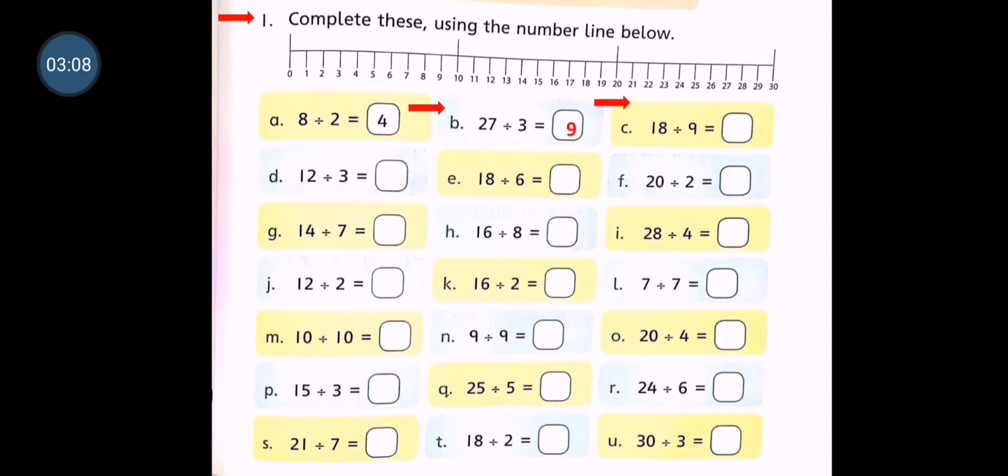18 divided by 9. Now you have to read the table of 9 and you will see where 18 comes. Student, keep in your mind, for multiplication and for division, you should know the table. If you don't know, you can't do multiplication, you can't do division.